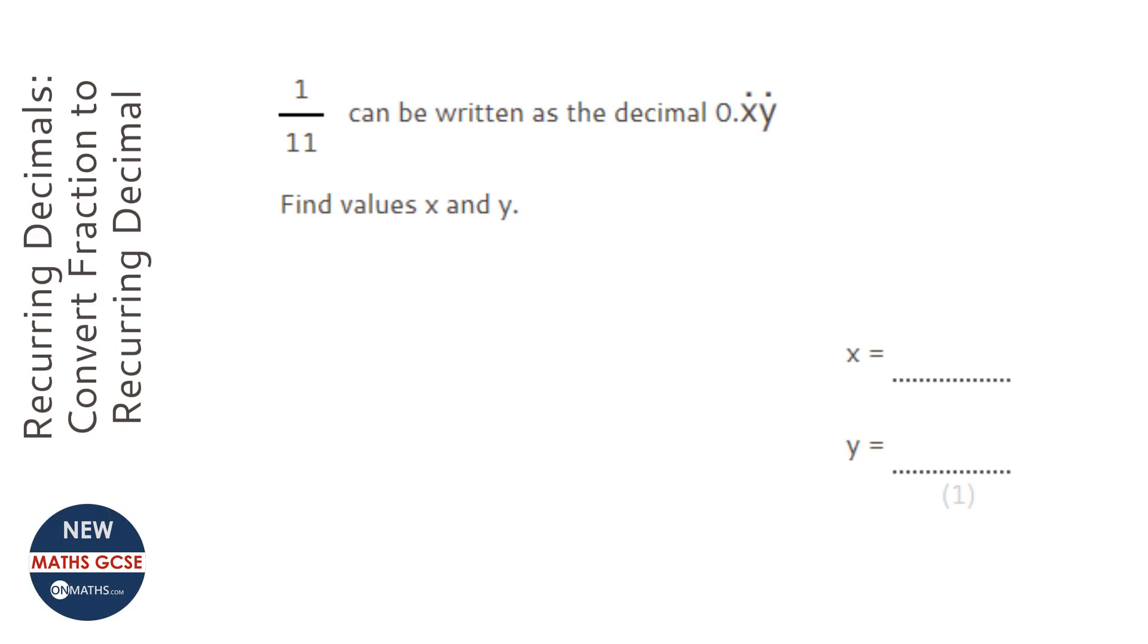You can also do this by the bus stop method, so if you have 11, and then do a lot of these. 11 into 1 doesn't go, so 0, carry the 1. 11 into 10 doesn't go, carry the 10, and so on.